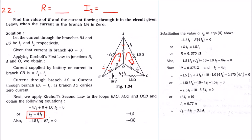For the second loop, we write: minus 1.5·i1 plus R·i2 equals zero, giving us Equation 2. Substituting Equation 1 into Equation 2 and simplifying, we get the value of R. So R is equal to 0.375 ohms.